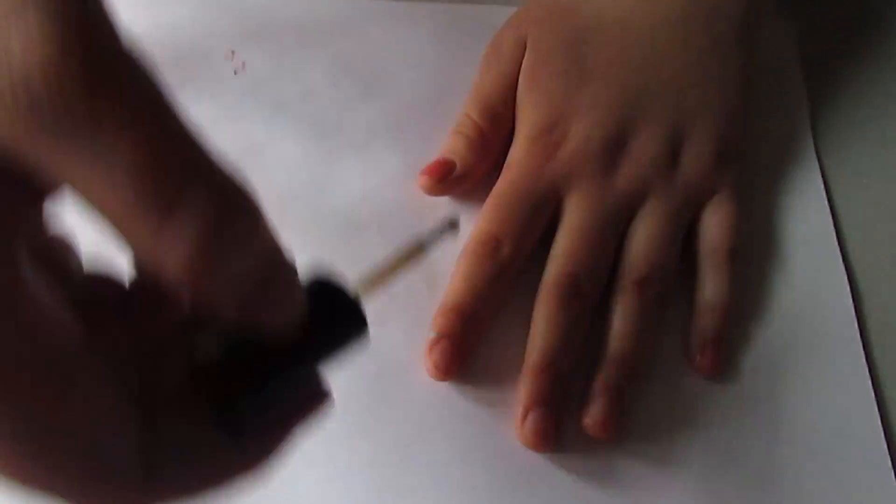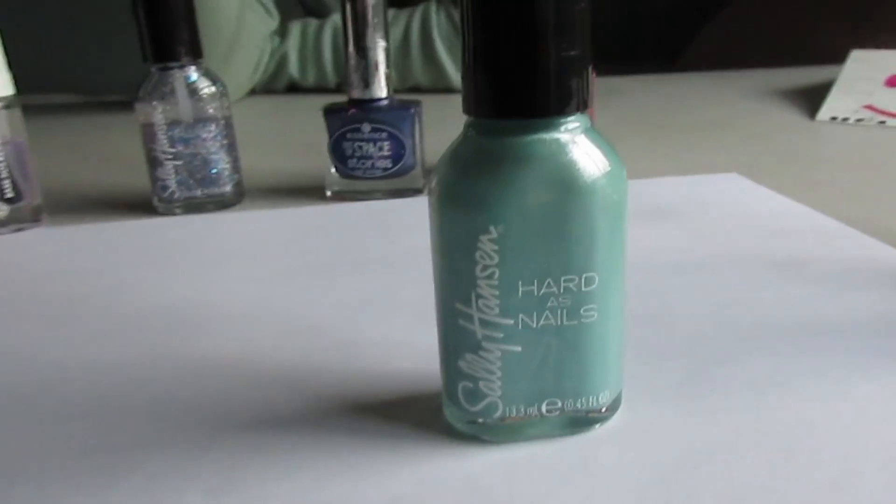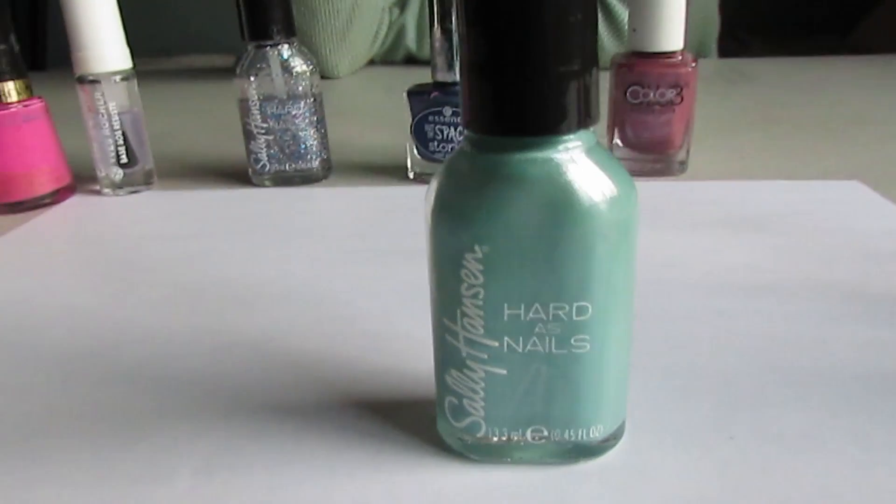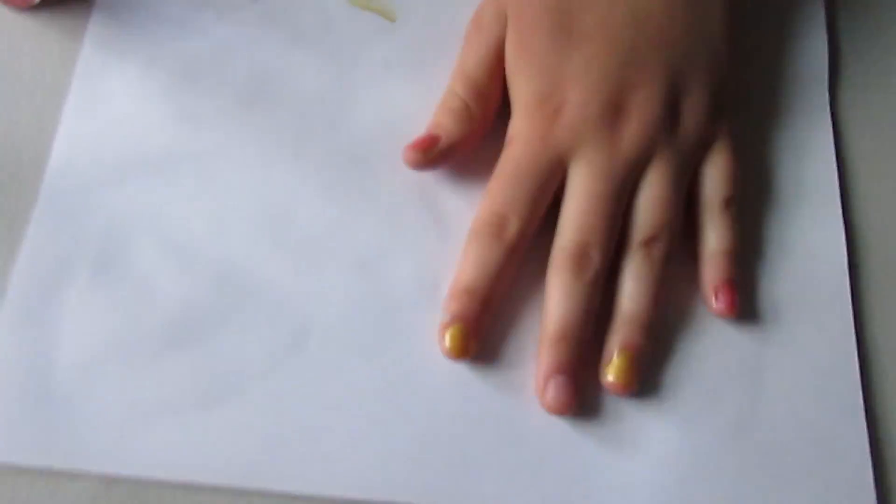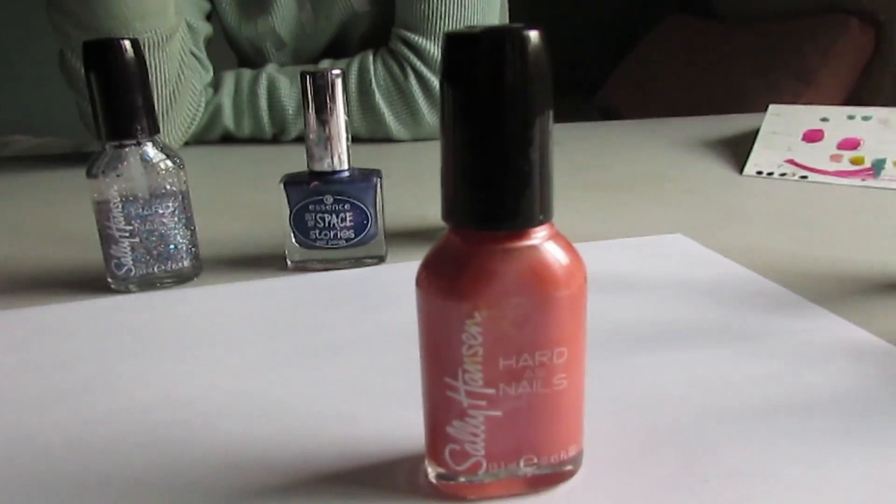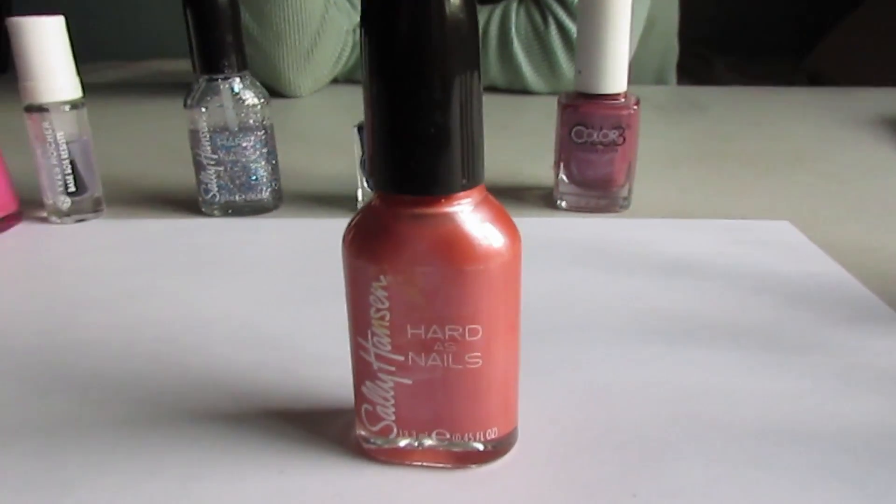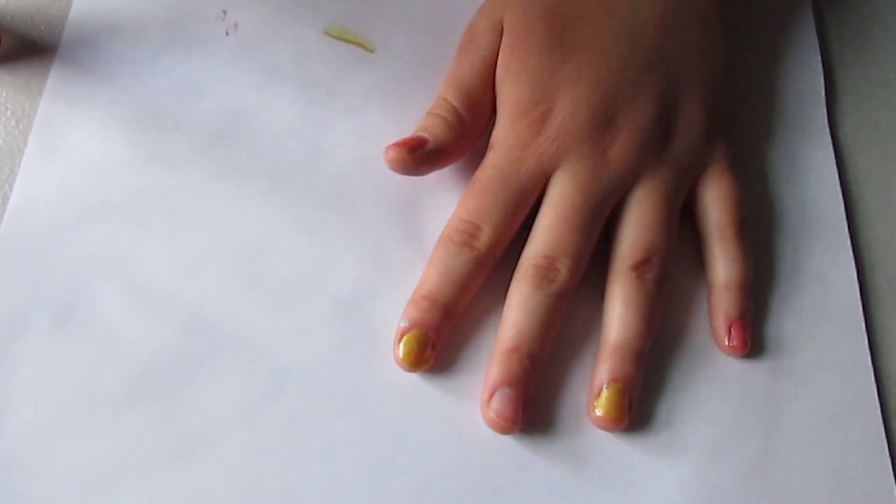I put pink on the outer fingers, then on the more inside fingers I put yellow, and then this green nail polish. Overall, I really love this. This is my favorite.